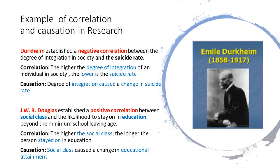Another example is that of J.W.B. Douglas, who established a positive correlation between social class and the likelihood to stay on in education beyond the minimum school-leaving age. He found that the higher the social class, the longer the person stayed on in education. Therefore, the cause of a change in educational attainment was social class. These are ways in which sociologists have carried out studies and established correlation and causation.